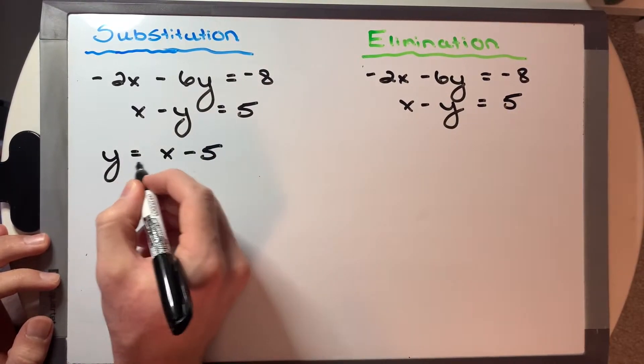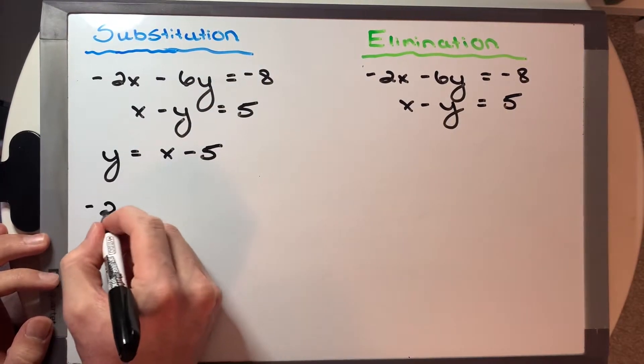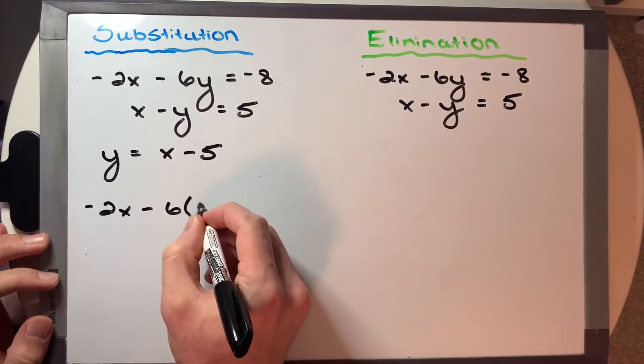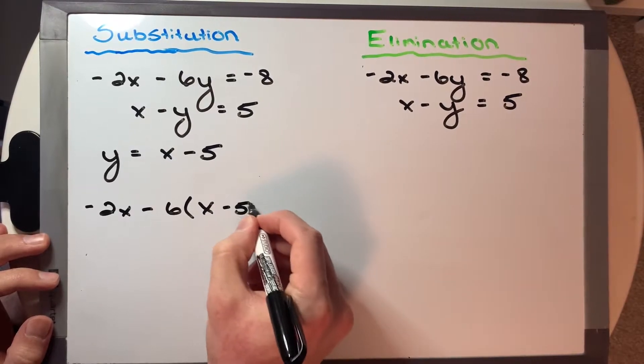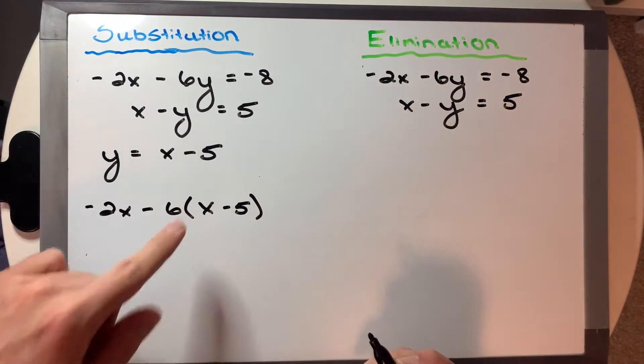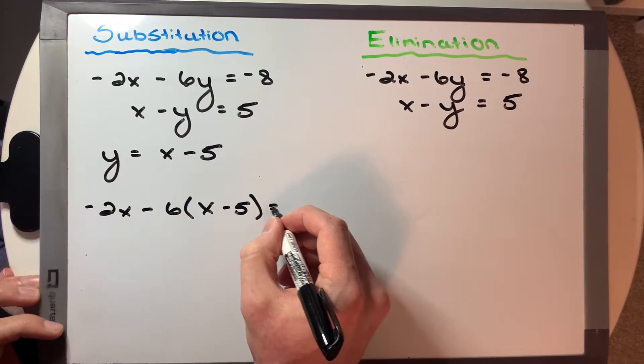Okay, let's sub this in for the top equation. So we'll have negative 2x minus 6 times (x minus 5), let's put the y value into the bracket, is equal to negative 8.